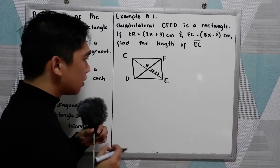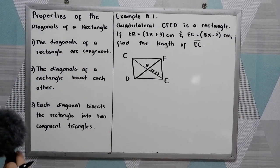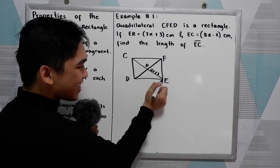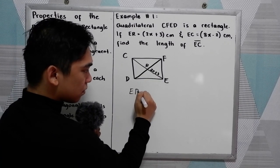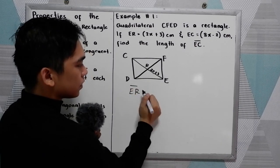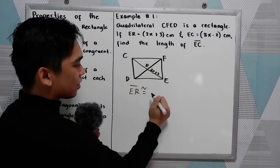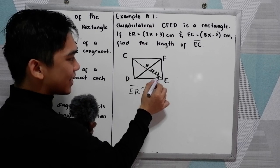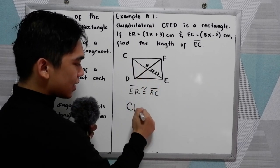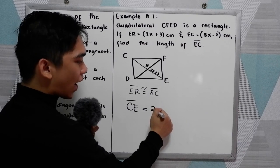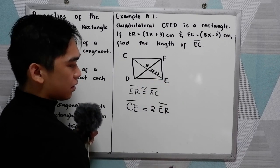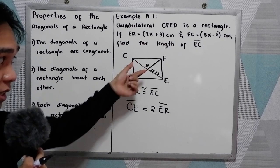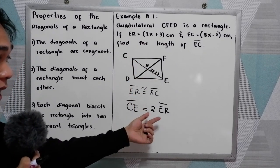We know that by property number two, the diagonals of the rectangle bisect each other. So E-R is congruent to C-R. By property number two, E-R is equal to R-C. To get C-E, that is twice E-R.